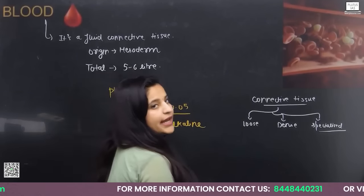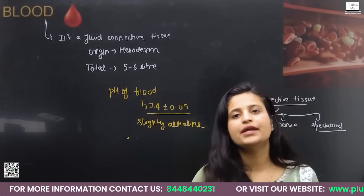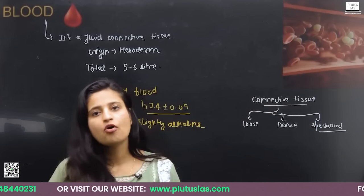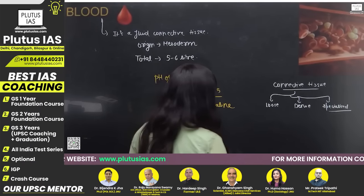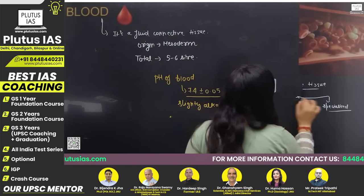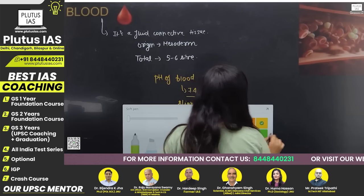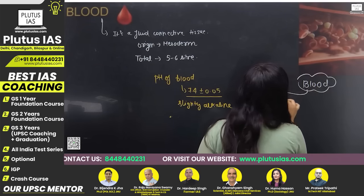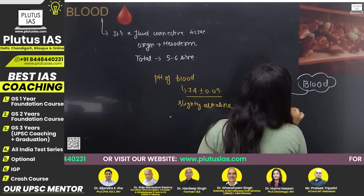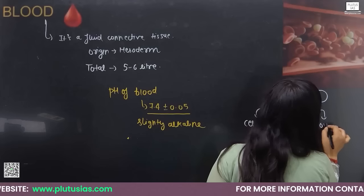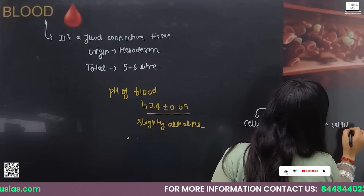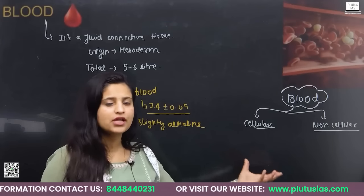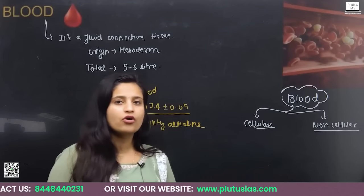What are the components present in the blood? Blood has two components: one is cellular components and the other is non-cellular components. To understand this, we take a test tube and collect blood in it.